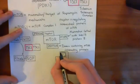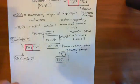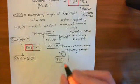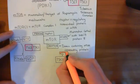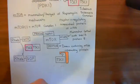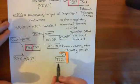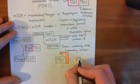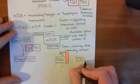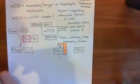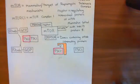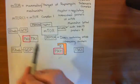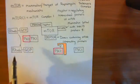This 14-3-3 protein — and nobody quite knows how it got that name — comes and associates with the phosphorylated TSC2. When it does so, it stops TSC2 from being able to bind to TSC1. So TSC1 goes off, and the tuberous sclerosis complex has broken down.